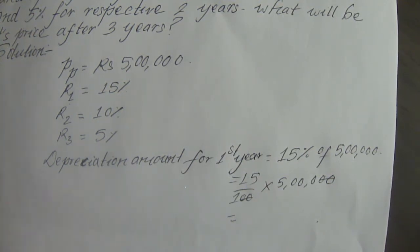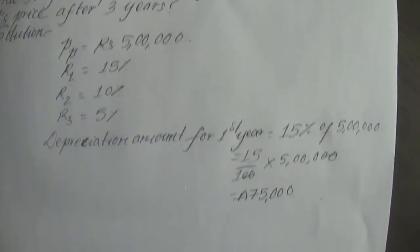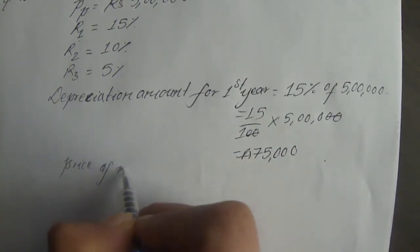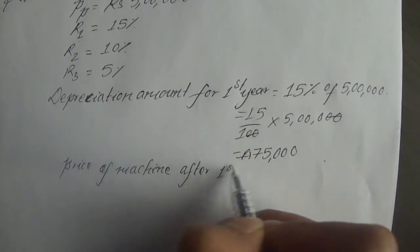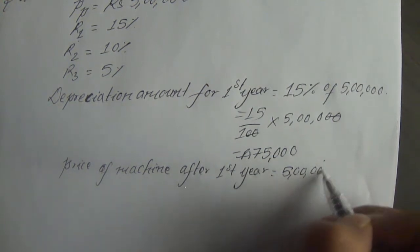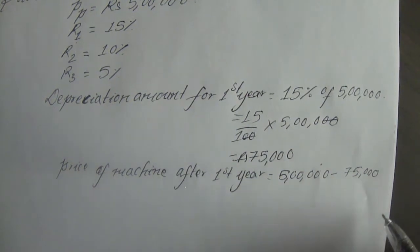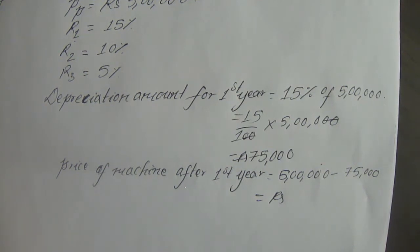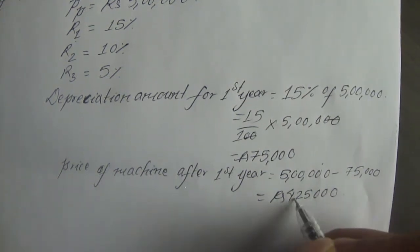15 into 5,000 gives us 75,000. So the depreciation amount for the first year is Rs. 75,000. Price of machine after first year: 5,00,000 minus 75,000 equals Rs. 4,25,000. After the first year, we have a machine value of Rs. 4,25,000.